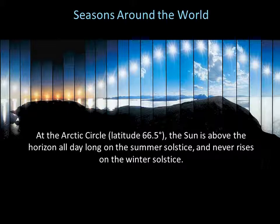The image here shows the Arctic Circle, where the sun remains above the horizon all day long on the summer solstice and never rises on the winter solstice. On the north and south poles of Earth, the sun is above the horizon for six months in summer and below the horizon for six months in winter.